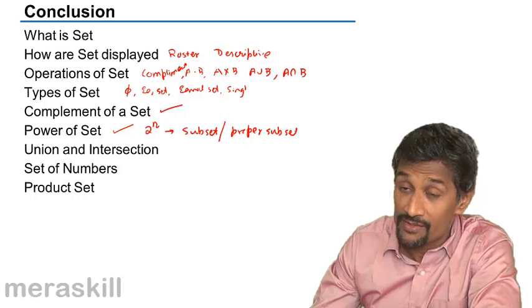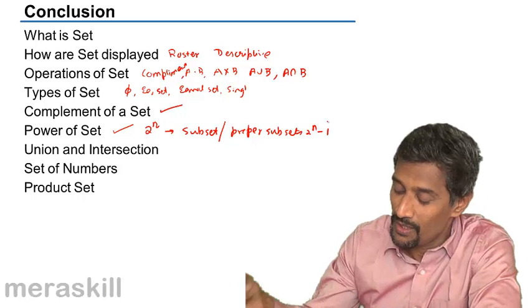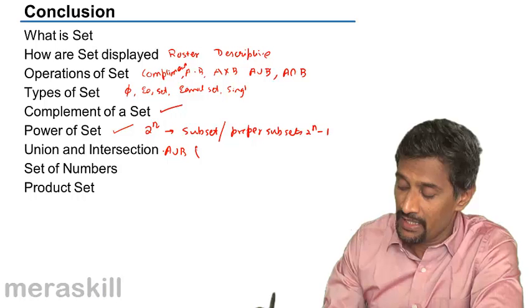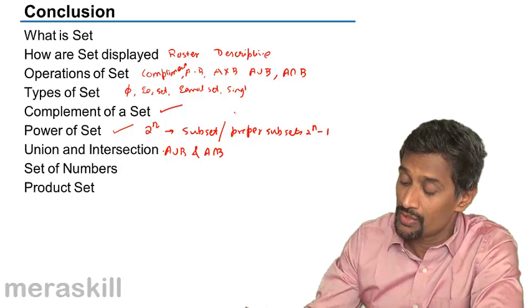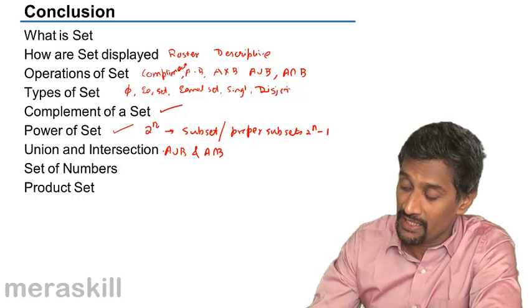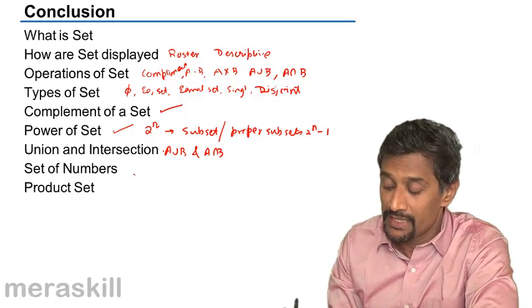Then we did union and intersection - A union B and A intersection B. We also did disjoint sets, which are sets that don't have anything in common.